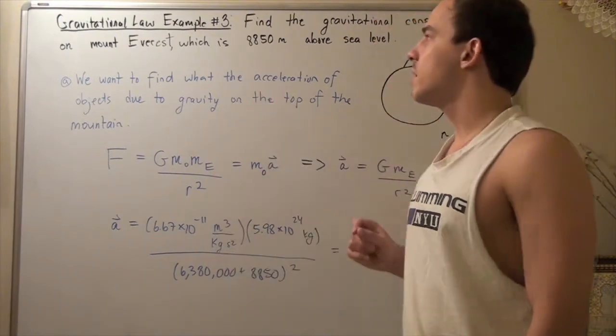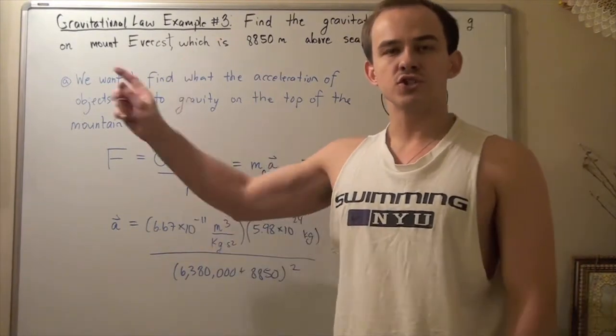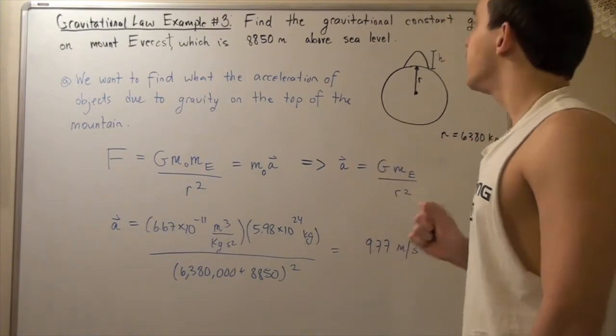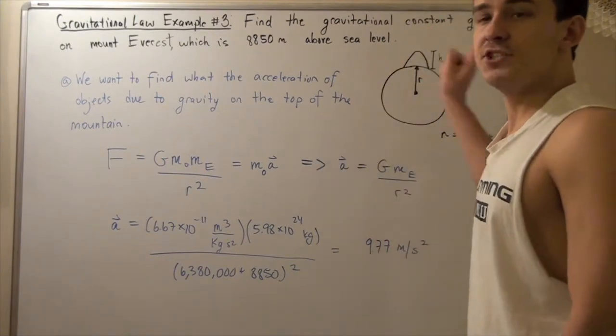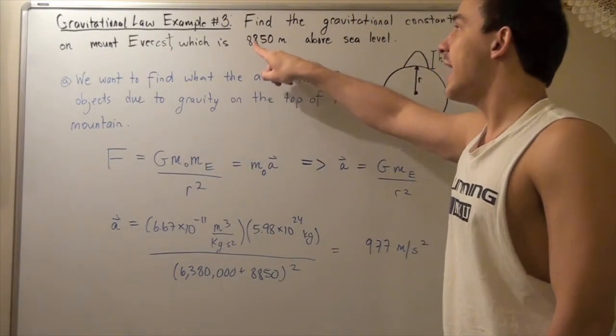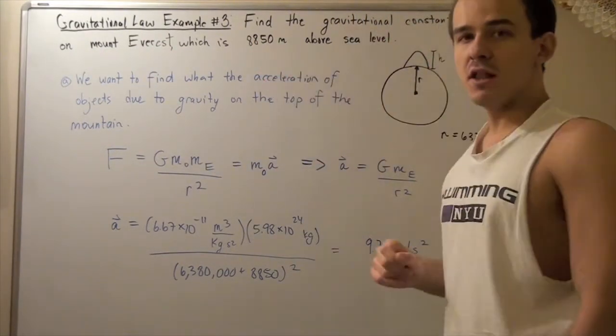Let's look at example number three that deals with the universal law of gravitation. Now we want to find the gravitational constant G on top of Mount Everest, which is 8,850 meters above sea level.